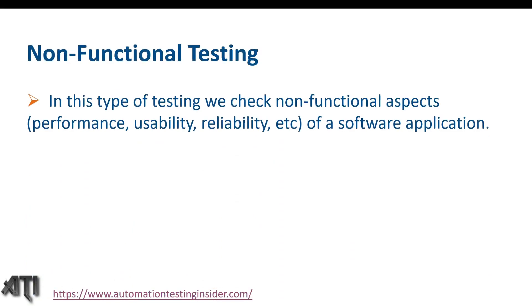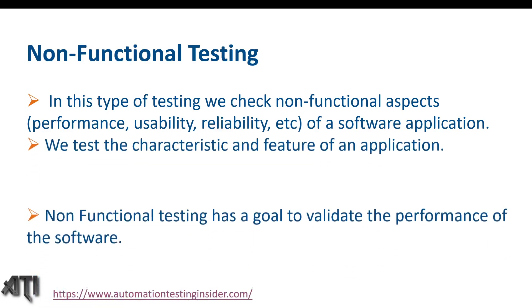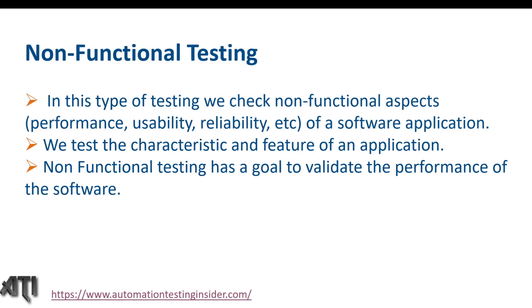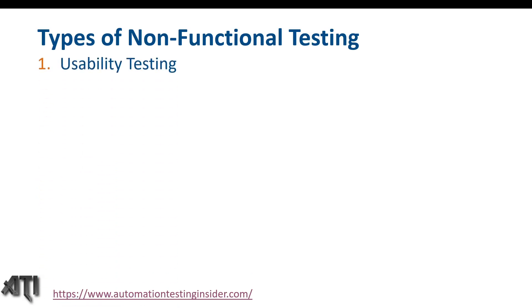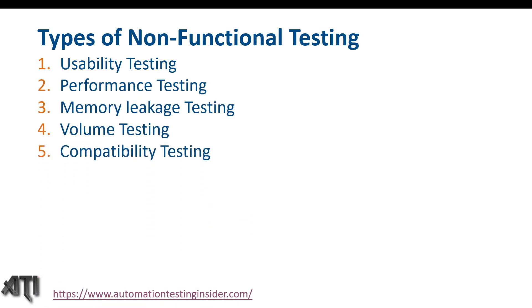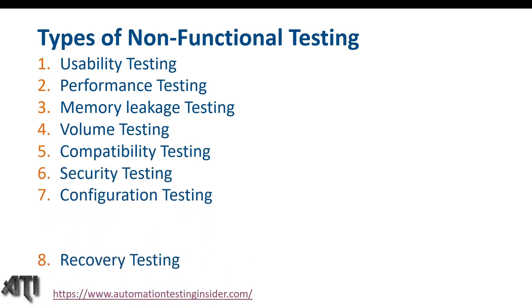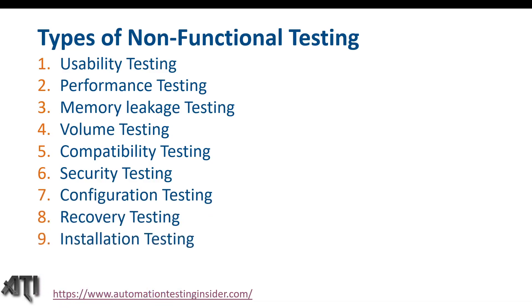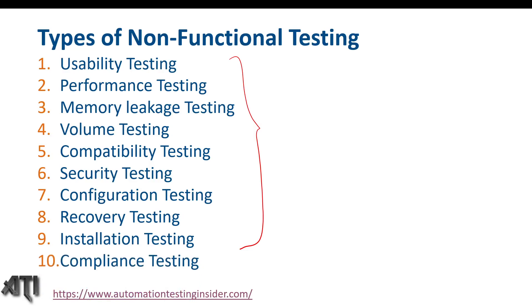Non-functional testing is the type of testing where we check non-functional aspects like performance, usability, reliability, etc. of a software application. We test the characteristics and features of an application, and non-functional testing has a goal to validate the performance of the software. The different types of non-functional testing include: usability testing, performance testing, memory leakage testing, volume testing, compatibility testing, security testing, configuration testing, recovery testing, and installation testing. In coming days I will talk about all these testing types in detail with examples.